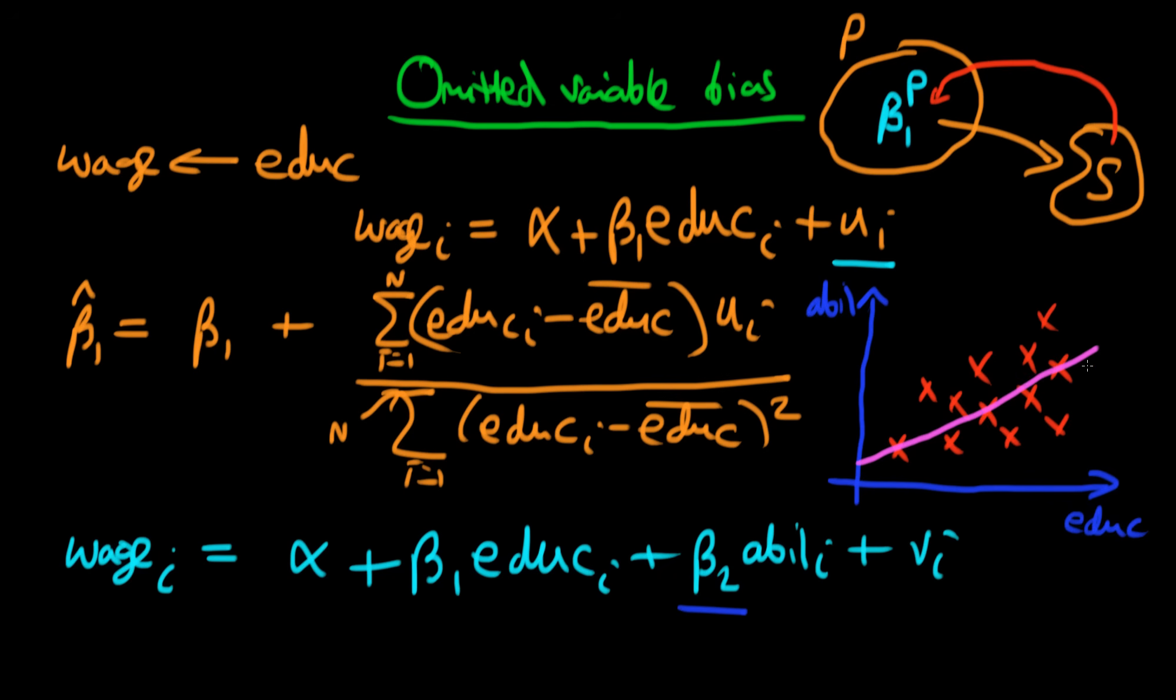between these two variables. In the next video we're going to talk about how this positive relationship between education, a variable we have included in our regression equation, and ability, a variable we haven't included which is important in determining wages, means that we're going to have omitted variable bias. We'll prove that in the next video.